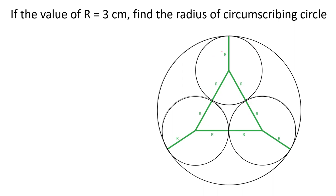If we take this triangle as ABC, this point is D. AD is the median of the triangle, and this point is the centroid of triangle ABC.